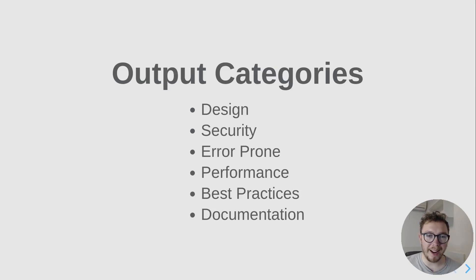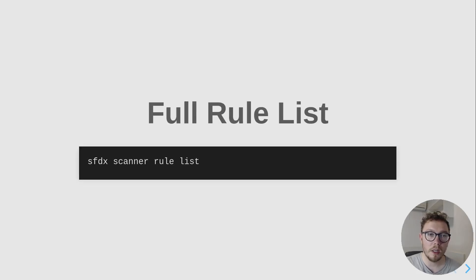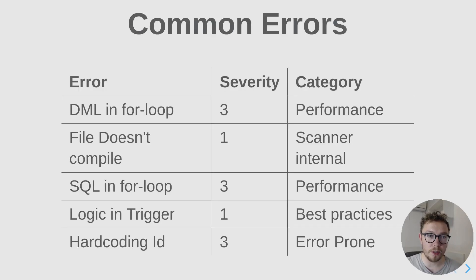In terms of what output categories — what rules are checked by this code — they break down into these main categories: design, security, error program, performance, best practices, and documentation. To get a full list of what that means, you can run this command to get the up-to-date version.